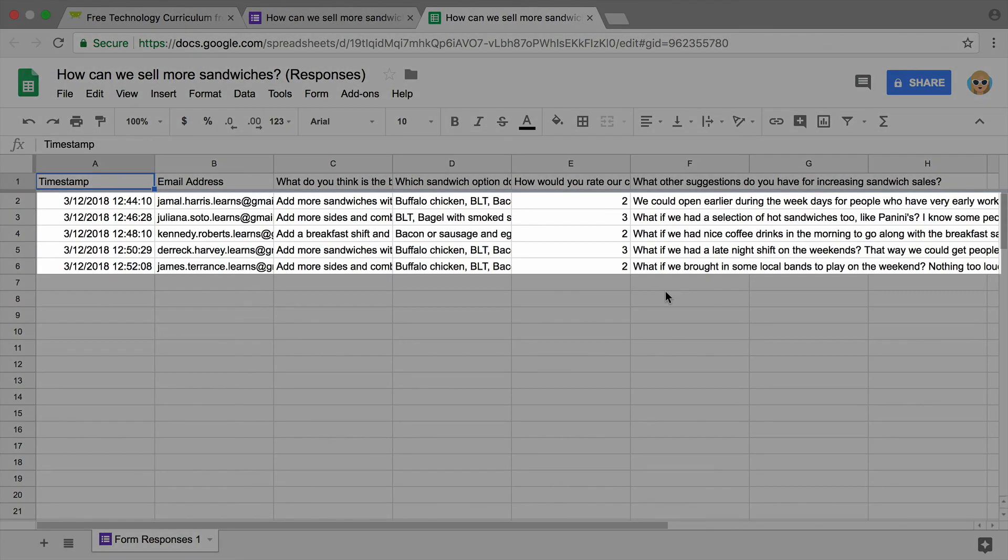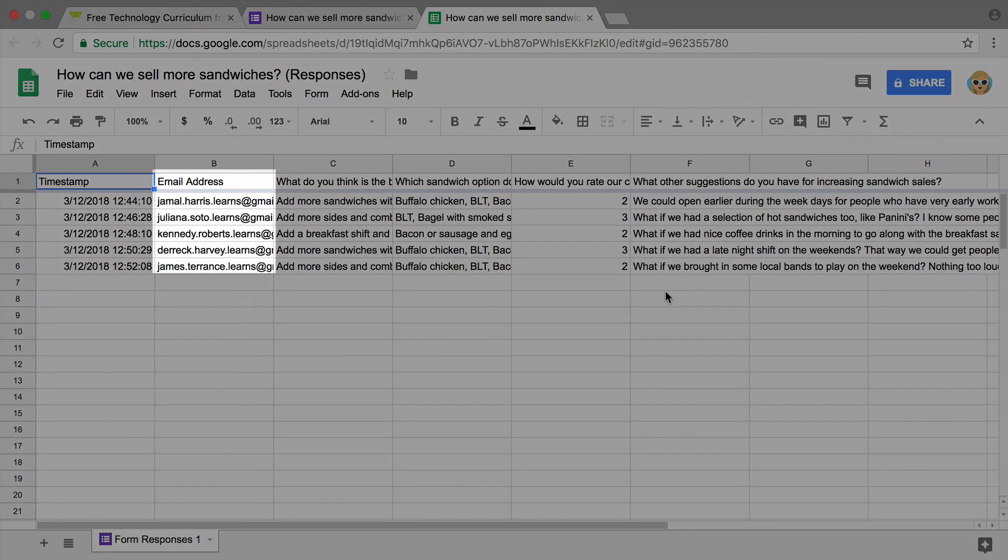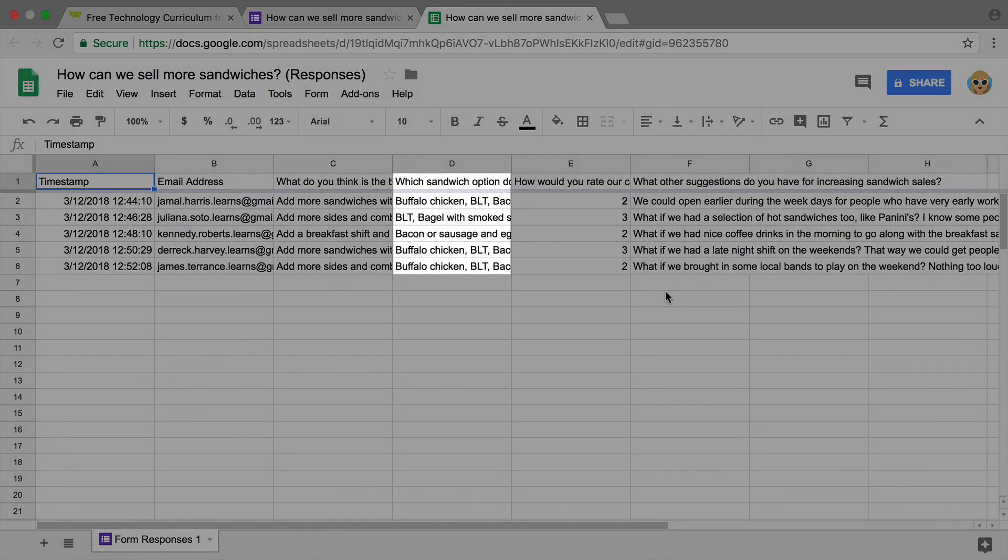Each row represents one person's response and each column a question. As people fill out your survey, the data will automatically be added to your spreadsheet.